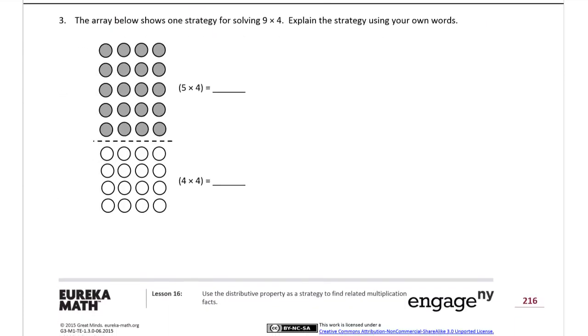And number 3, the array below shows one strategy for solving 9 times 4. So, maybe if you're not good at your 9s yet, or your 4s, explain the strategy using your own words. So, we're going to just use this, and then we're going to write maybe a sentence, maybe 2. This 5 times 4, that's 20. And then this 4 rows of 4 is 16.